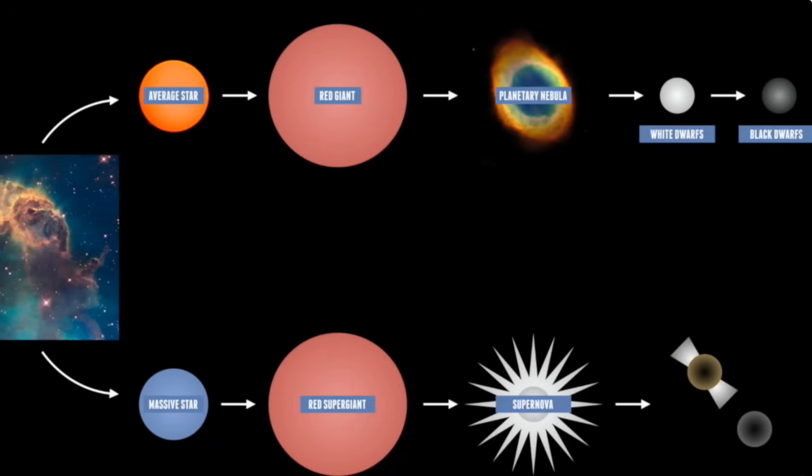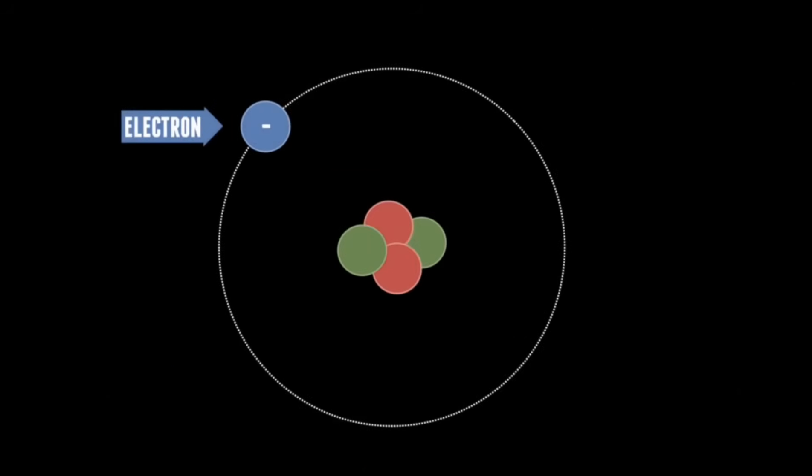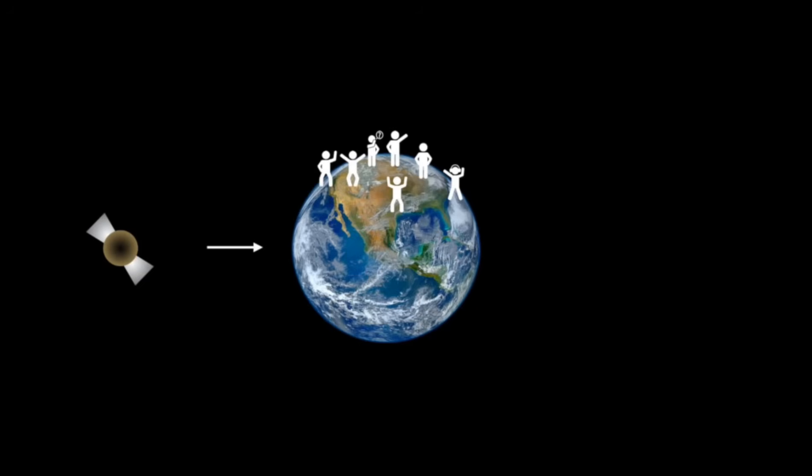A supernova explosion leaves behind a far more compressed corpse. The violent end to a massive star produces so much pressure that the star's core experiences a remarkable subatomic change. Electrons, which are negatively charged particles that orbit the nucleus of the atom, are actually squeezed into the nucleus. The electrons join with the protons to become neutrons. The process also removes all the space within the atom, leading to a fantastic compression of a star's remnant. To make something as dense as a neutron star on Earth, we would have to take all the people in the world and squeeze them into the size of a raindrop.